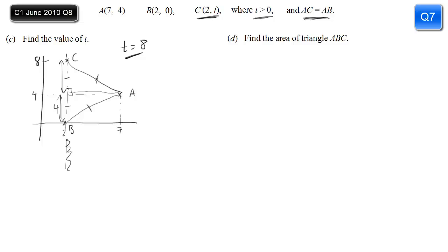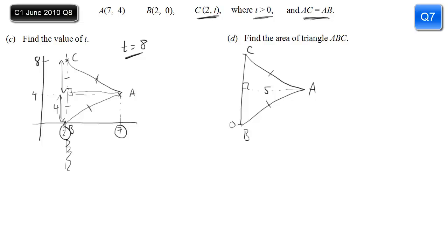That same diagram makes part D straightforward. For triangle ABC: the base along the horizontal is the difference in x-coordinates of A and B, which is 5. C is at y equals 8 and B is at y equals 0, so that side is 8. Turning your head 90 degrees, 8 is the base and 5 is the height. Area equals one half times base times height: half times 8 times 5 equals 20.